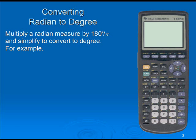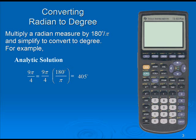Converting Radian to Degree. Multiply a Radian measure by 180 degrees divided by pi and simplify to convert to a degree. For example, 9π over 4 radians: we take our 9π over 4 radian measure, multiply by 180 degrees divided by π, which simplifies down to 405 degrees.